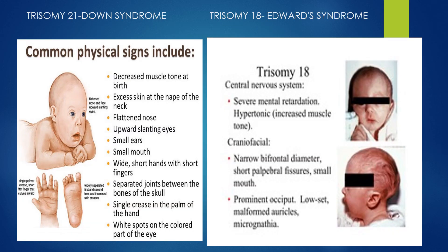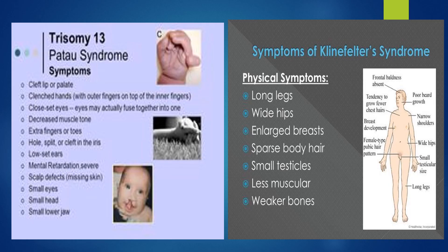This slide shows some of the symptoms of the diseases we discussed. On the left is trisomy 21, Down syndrome, and on the right is trisomy 18, Edwards syndrome, with their common physical signs. We also have trisomy 13, Patau syndrome, on the left, and some symptoms of Klinefelter syndrome on the right. Remember that Klinefelter syndrome only occurs in males.